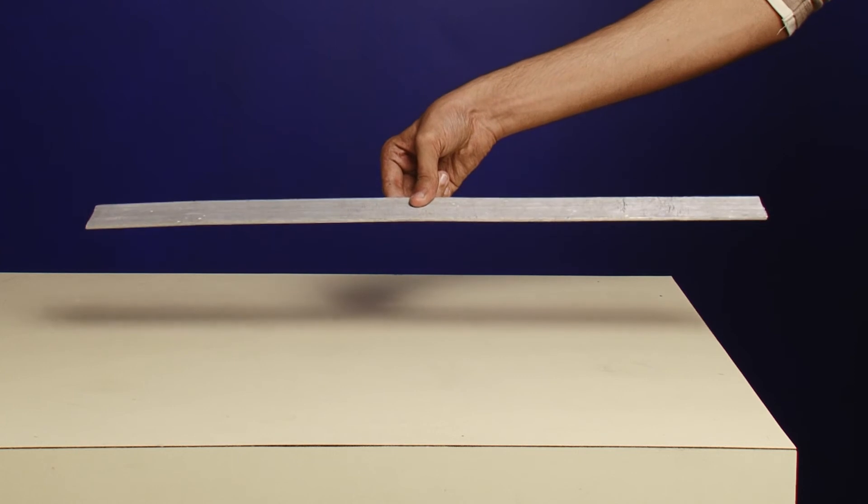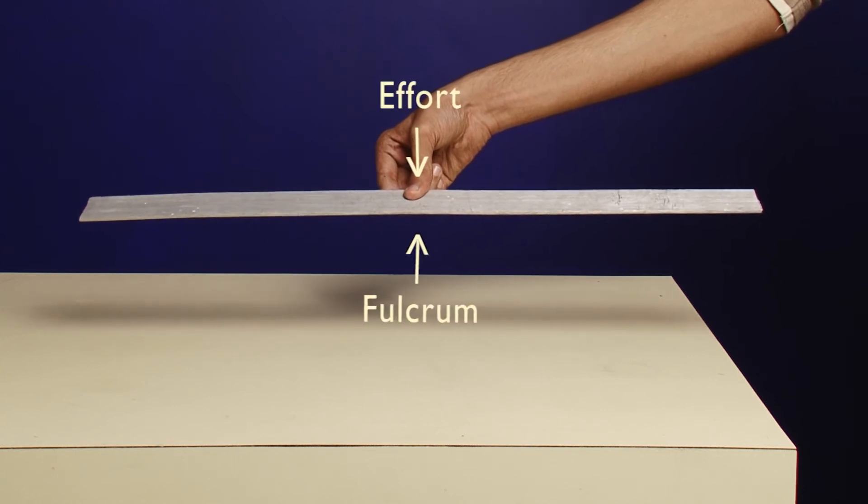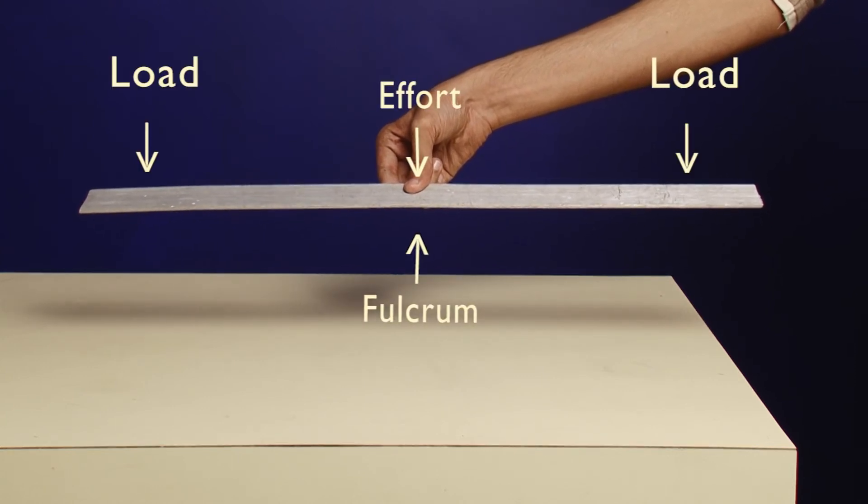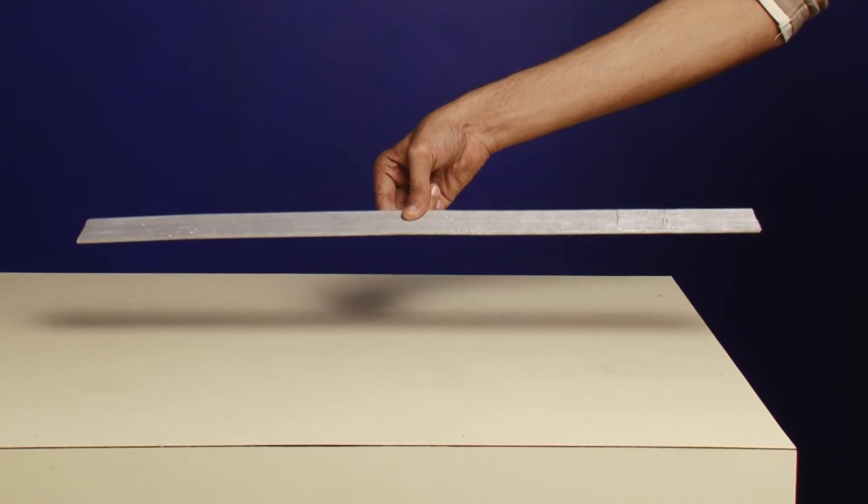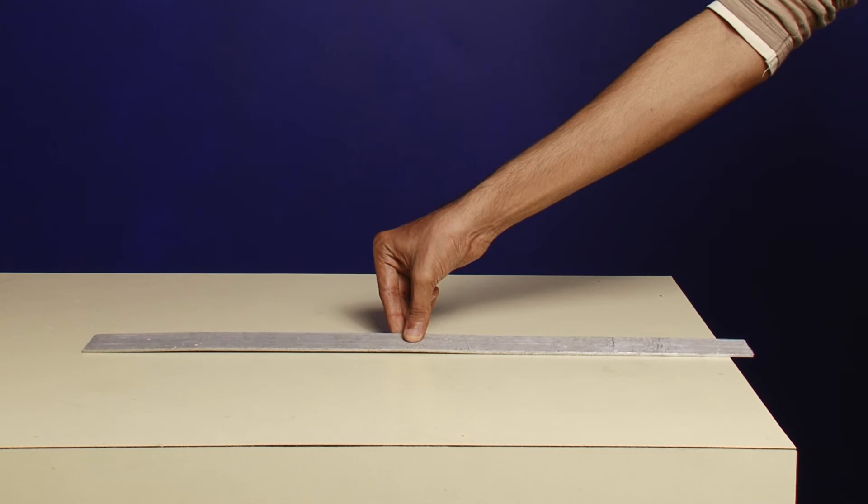But when we pick the scale from the center, the effort applied is by our thumb and the fulcrum is our fingers. The length of the scale is the load, which gets distributed to either sides, making it easier to pick up the scale.